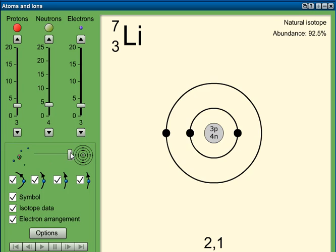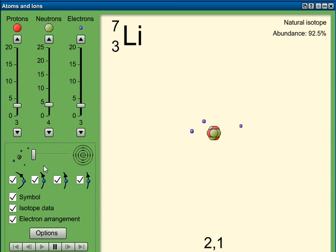So it's got an atomic mass of seven because it's three protons and four neutrons. We can have a look at the other form of this diagram.